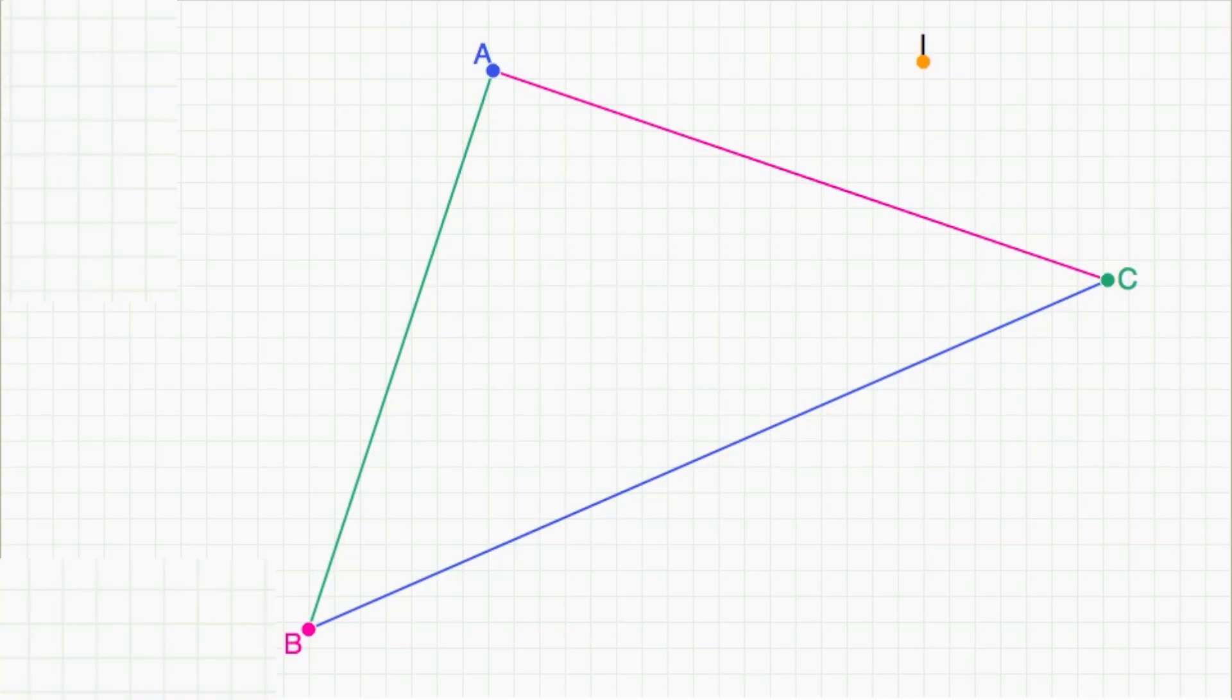Once you know little a, little b, and little c, check their signs to determine if i is inside the triangle.